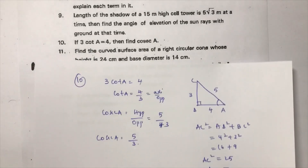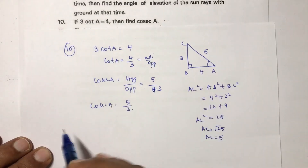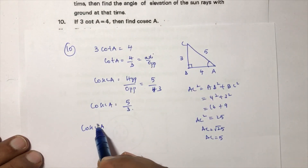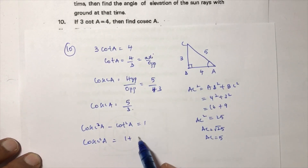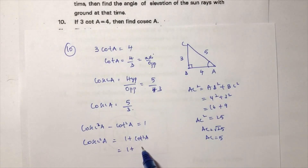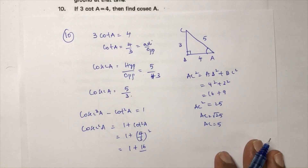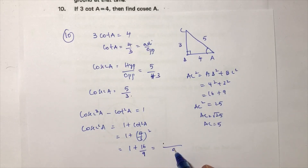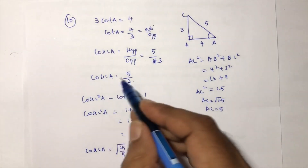Method 2 — using identity: cosec²A − cot²A = 1, so cosec²A = 1 + cot²A = 1 + (4/3)² = 1 + 16/9 = (9 + 16)/9 = 25/9. Therefore cosec A = √(25/9) = 5/3.